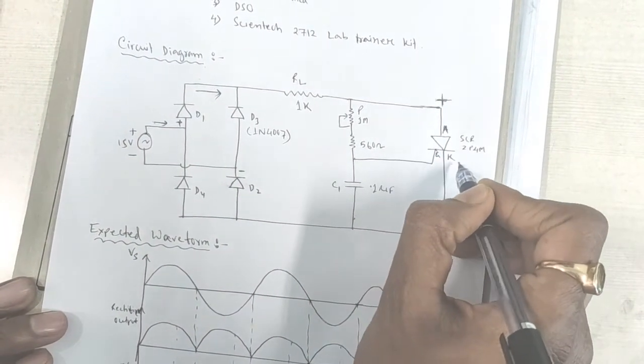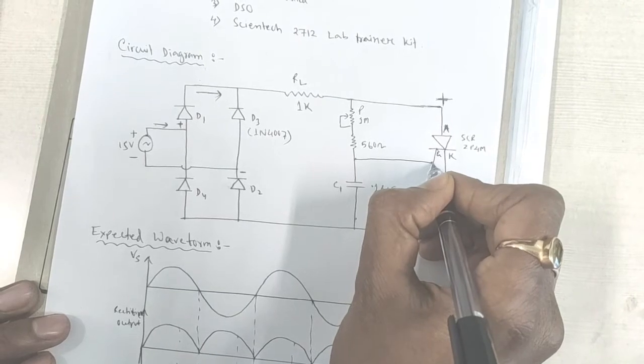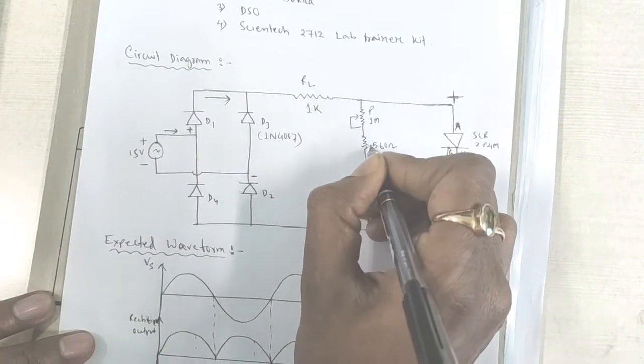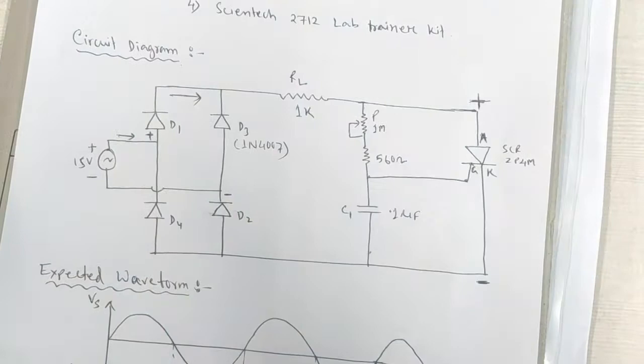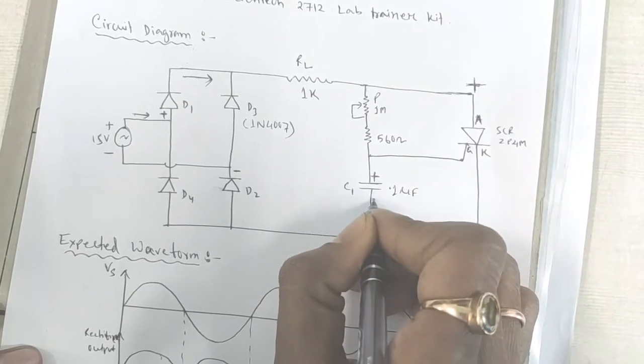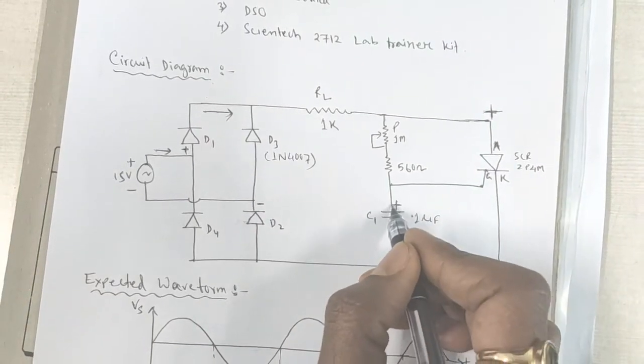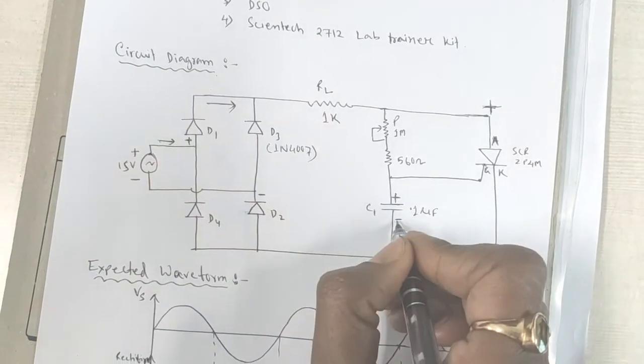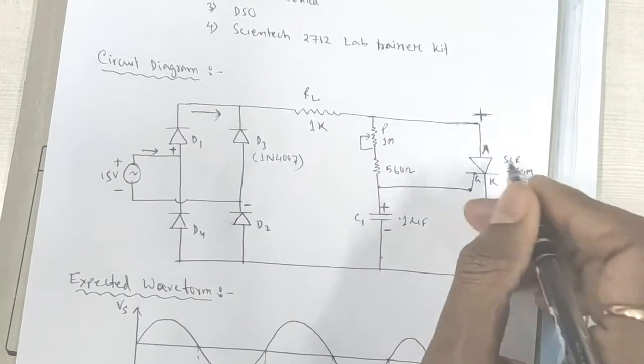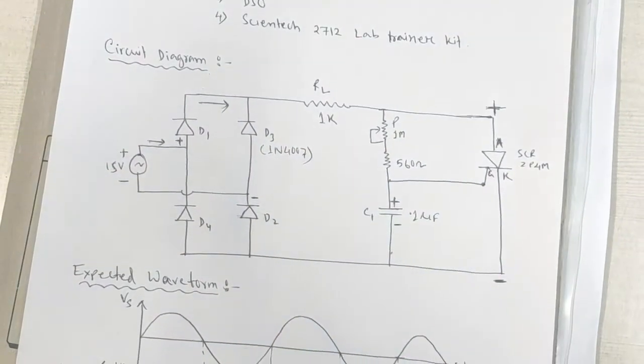Initially, this SCR is in forward blocking mode. SCR will be in forward conduction mode when we have applied a gate voltage here. Current will pass through this potentiometer and 560 ohm. Then polarity of this capacitor will be positive and negative. The capacitor will be charges during the positive half cycle. And once it exceeds the minimum gate voltage, then it will turn on this SCR according to this resistance and capacitance.